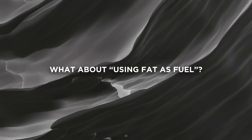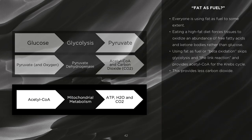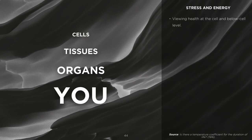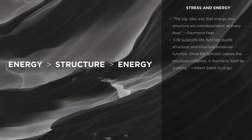What about using fat as fuel? Everyone is using fat as fuel to some extent. However, using fat as fuel, or beta-oxidation, skips glycolysis and the link reaction and provides acetyl-CoA for the Krebs cycle. This provides less carbon dioxide in addition to other mechanisms which can slow the rate of metabolism. Why does this matter? Cells form tissues, tissues form organs, and organs form you. The key idea is that energy and structure are interdependent at every level. Life supports life, function builds structure, and structure produces function. Once the function ceases, the structure collapses. The structure and function of the tissue depends on the energy that the tissue is producing.